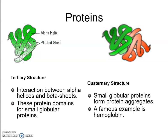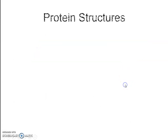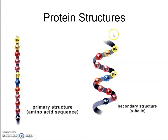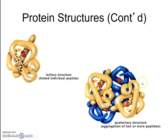Protein folding occurs in organelles such as the Golgi complex, and the folding pattern determines the protein's function. Genetic abnormalities can arise when a mutation in a gene sequence causes a protein to fold incorrectly, meaning it won't function as it should, leading to genetic disorders. We will discuss proteins further in the context of protein synthesis and genetics.